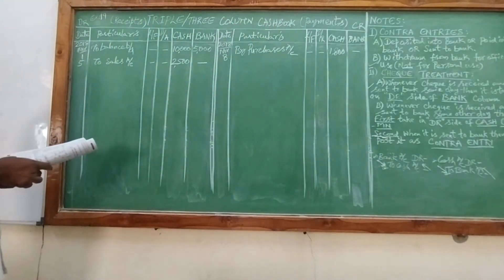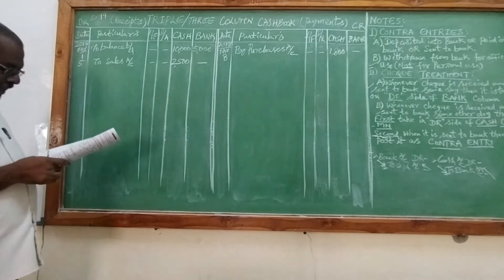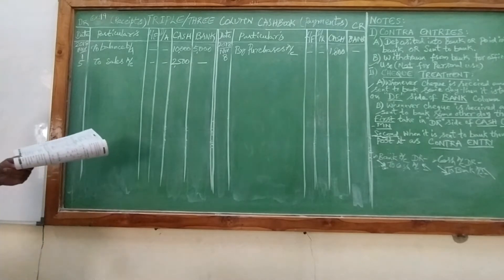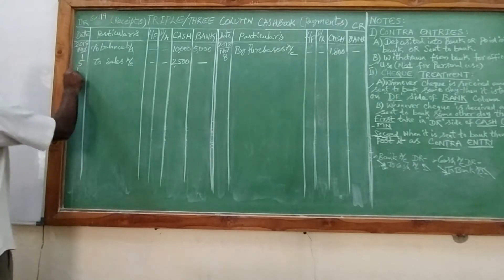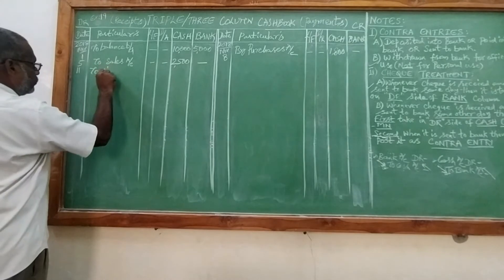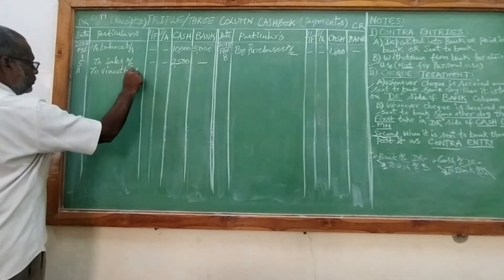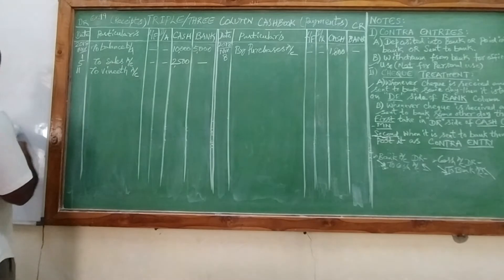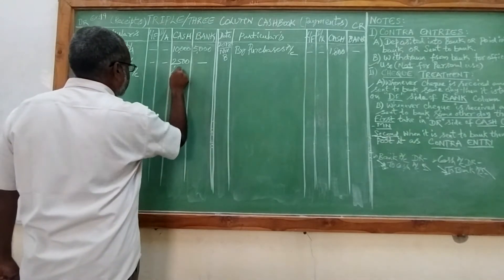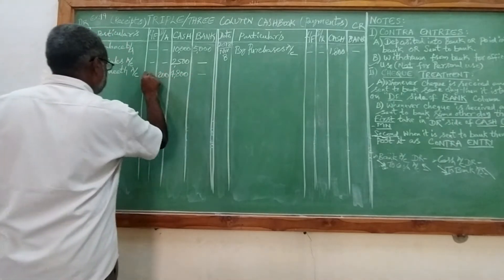We received 4,800 from a debtor, and there is a discount allowed of 200. Since it is a receipt, we will take it on the debit side. So 4,800 goes in the debit side cash column, and 200 goes in the discount allowed column.